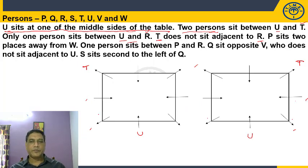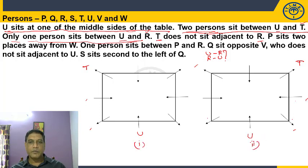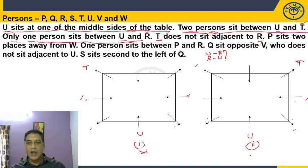In case one, leaving two persons between U and T, we place T on one side. In case two, leaving two persons on the other side, we place T there. Now for the next statement — only one person sits between U and R — again R could be to the right or left of U. This gives two possible places for R in each arrangement, leading to four cases total.